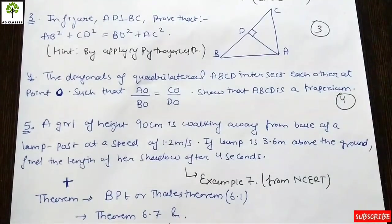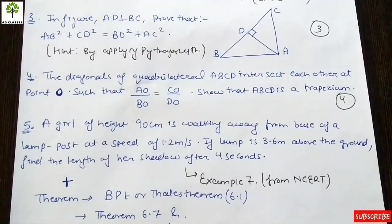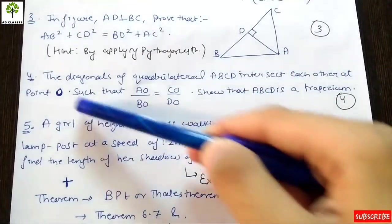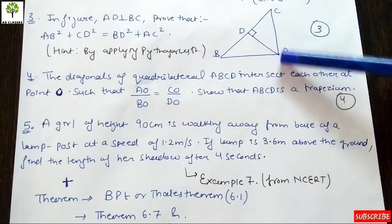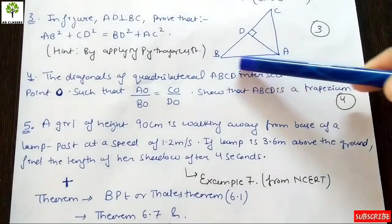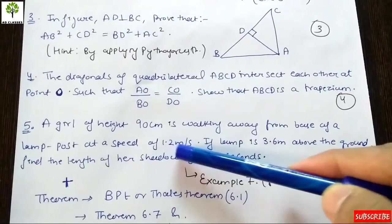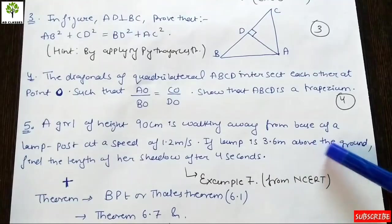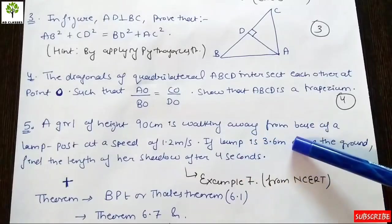Question number 5: A girl of height 90 cm is walking away from the base of a lamp post at a speed of 1.2 meters per second. If the lamp is 3.6 meters above ground level, find the length of her shadow after 4 seconds.